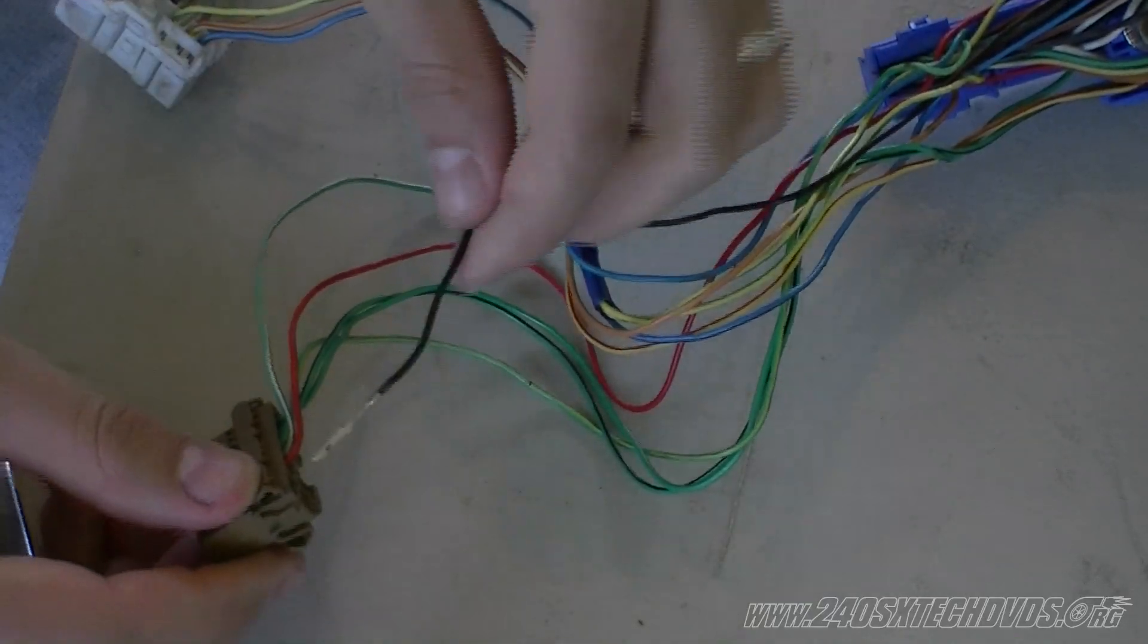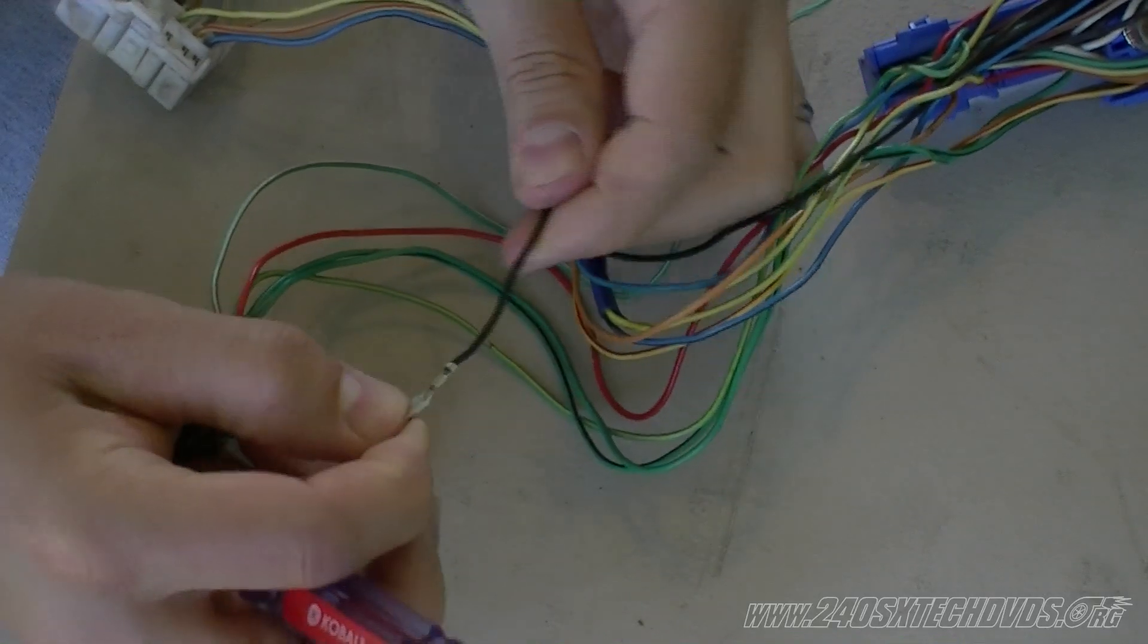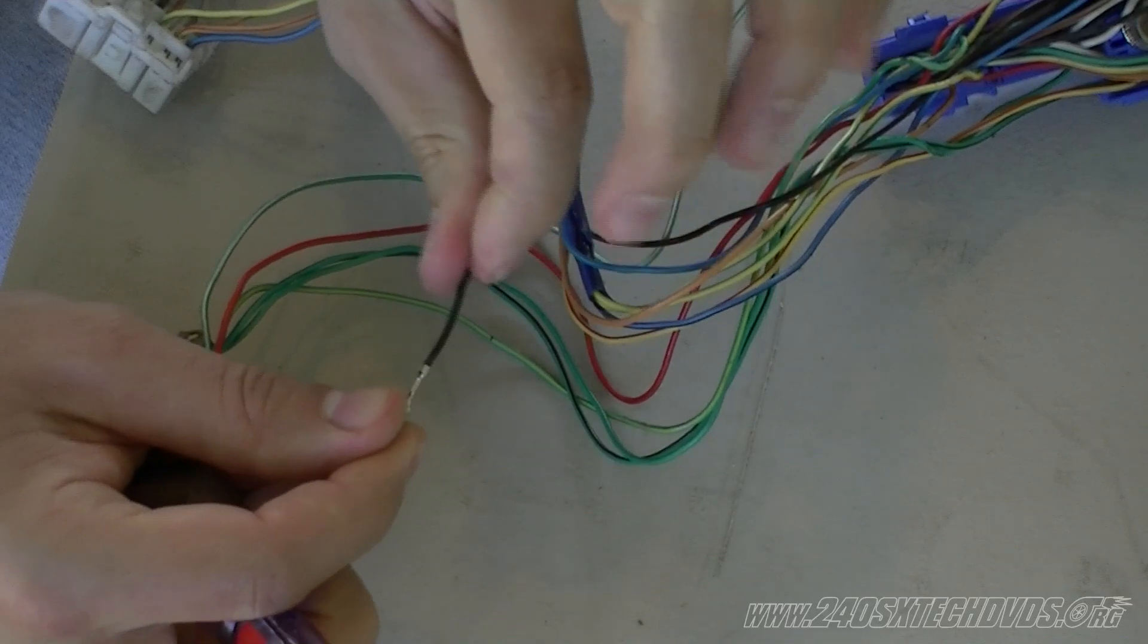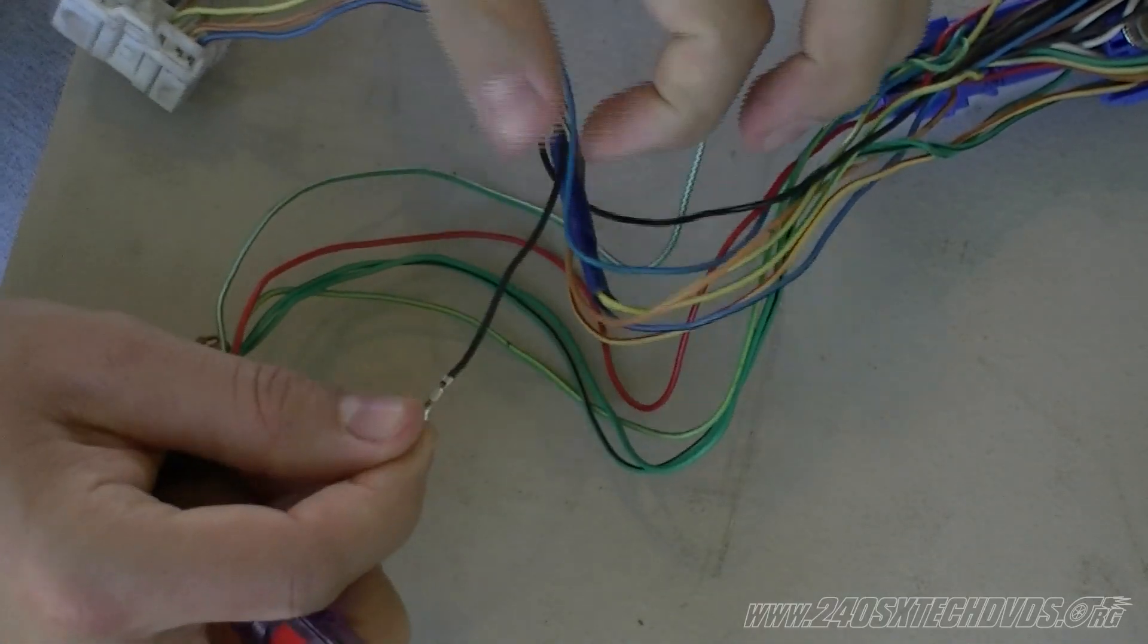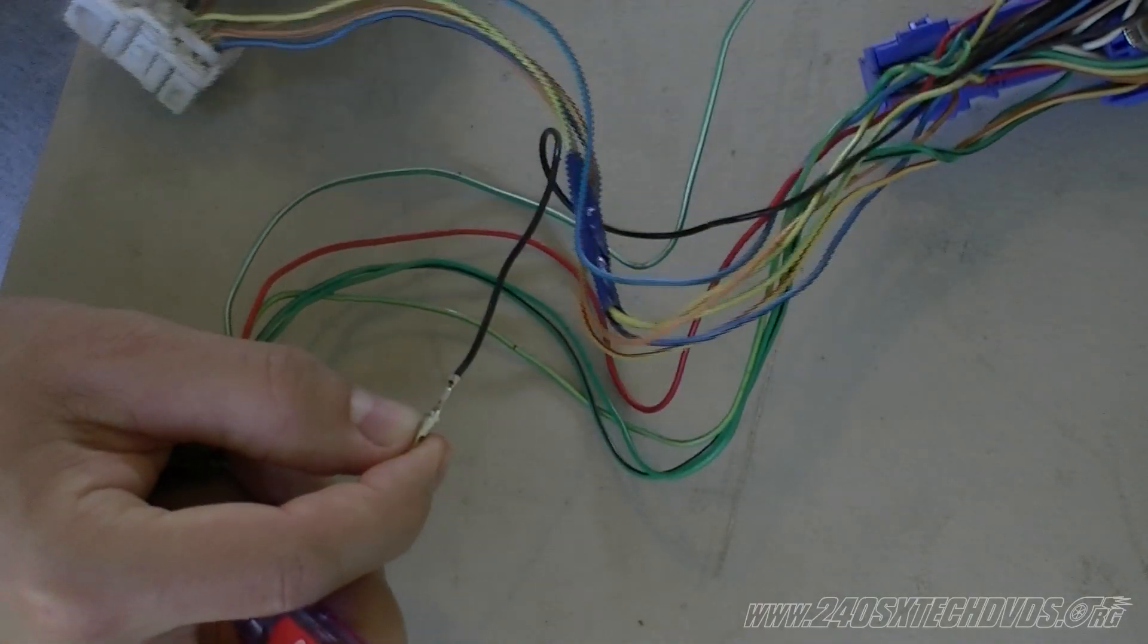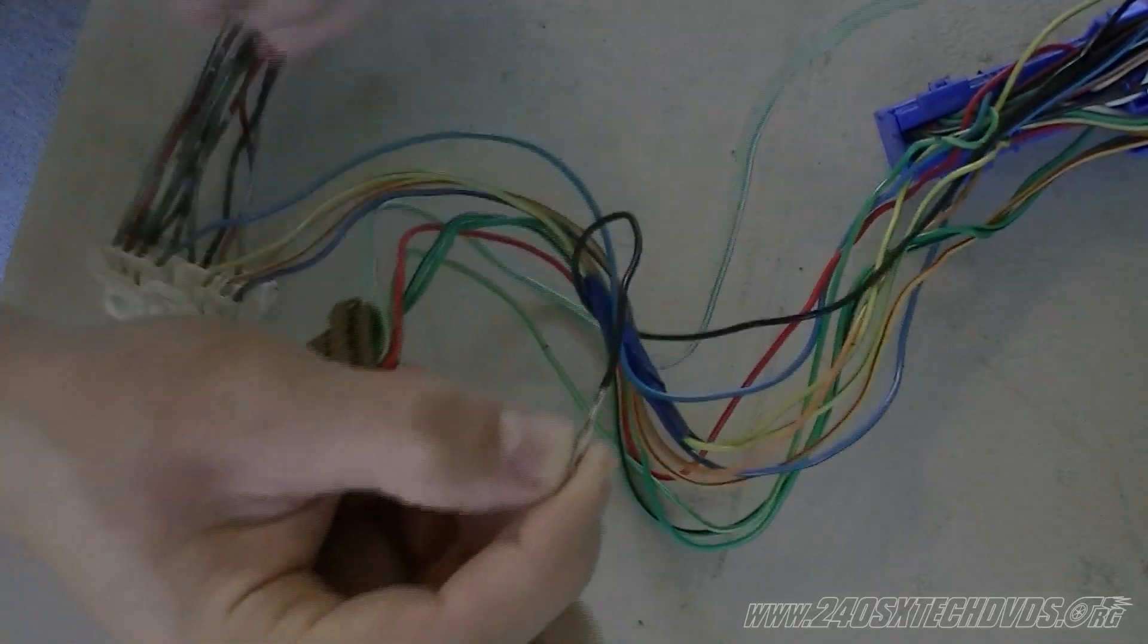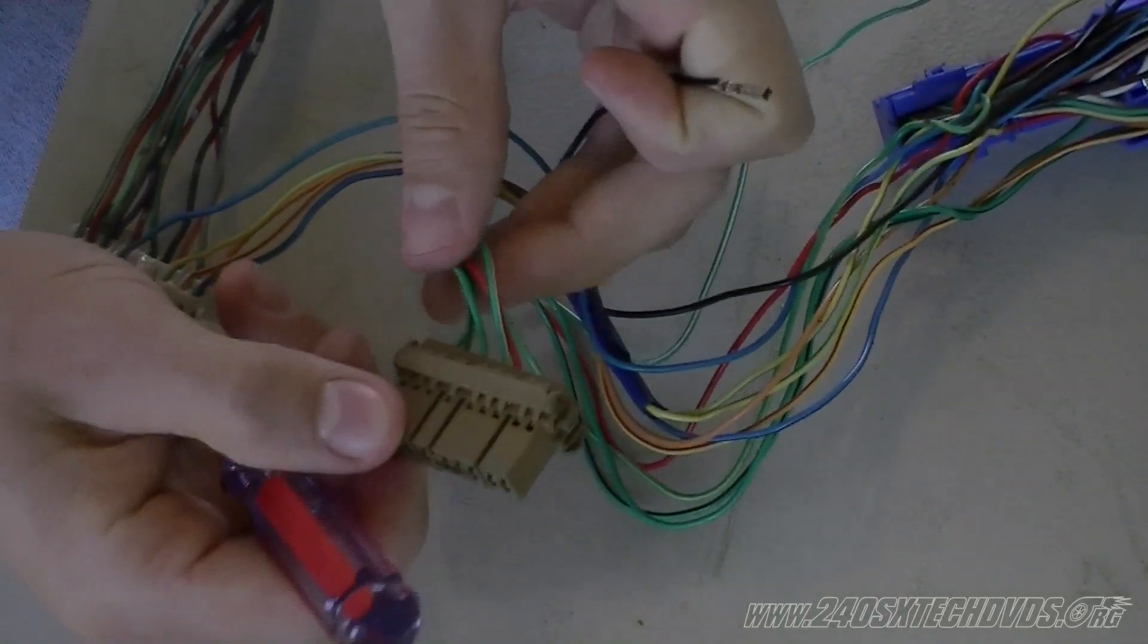Basically what we're going to do with this one is we're going to cut the pin off of it, the connector, and then we're going to wire it onto another black wire on the harness for our ground, since the single overhead car does not have a ground on the dash plug where the dual overhead cam harness does.